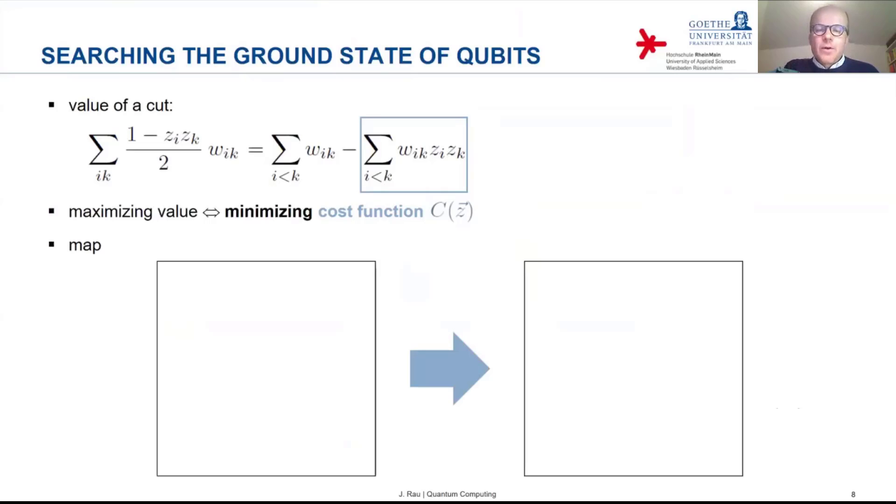Now consider the following map from this classical problem to a problem concerning qubits. So we have the nodes in the two subgroups with two possible values of the variable z, either plus one or minus one. And on the other side, we have qubits, which can be in basis states zero or one.